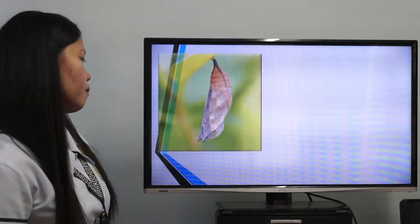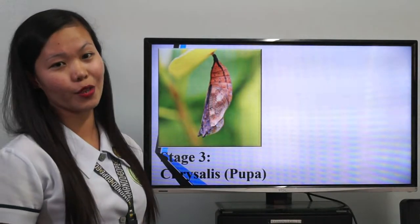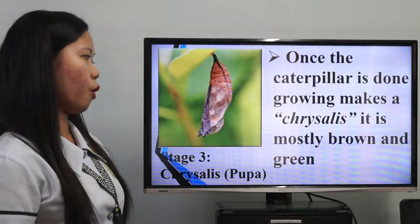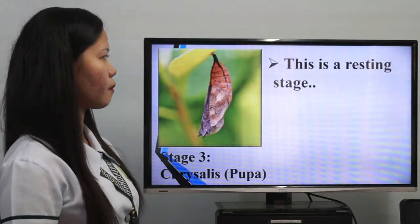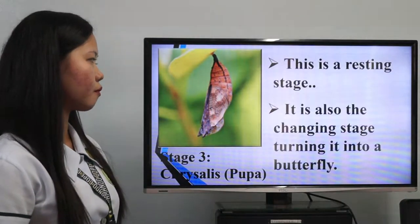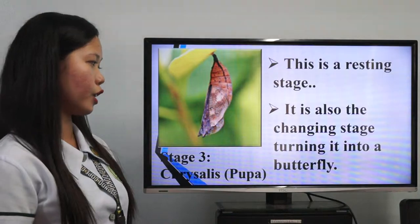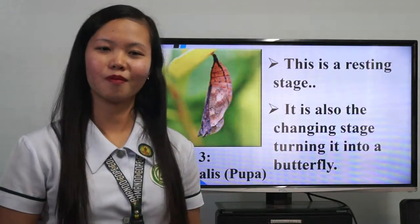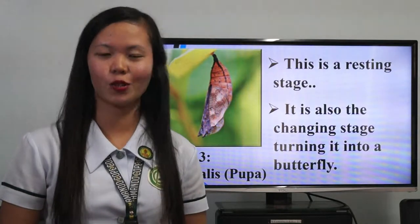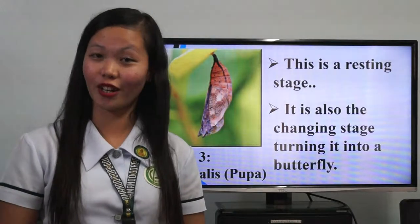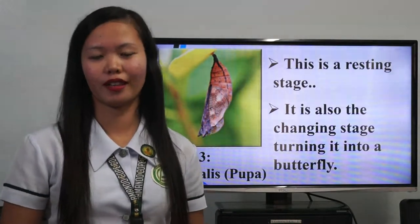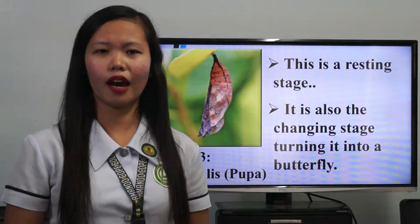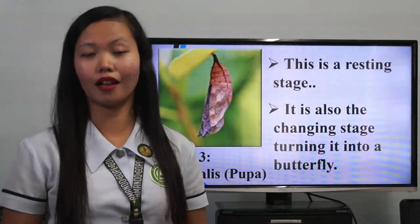Stage three is the chrysalis, or pupa. Once the caterpillar is done growing, it makes a chrysalis, which is mostly brown and green. This is a resting stage and also the changing stage — the caterpillar starts to change and turn into a butterfly. Its shape starts to change quickly until it turns into a butterfly. All this happens inside the chrysalis and does not take a long time.